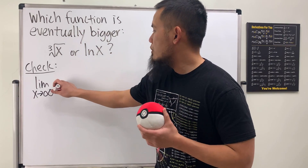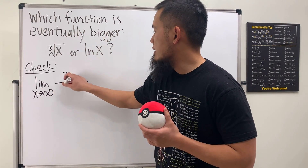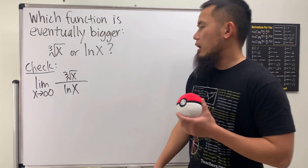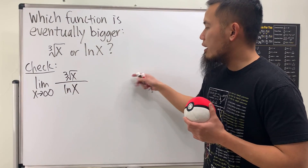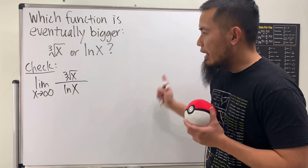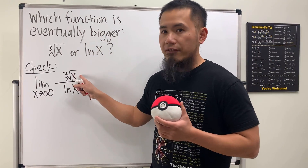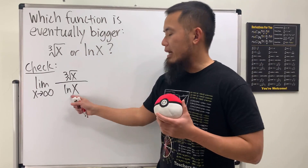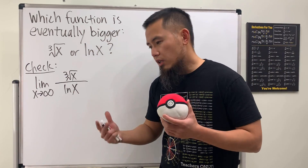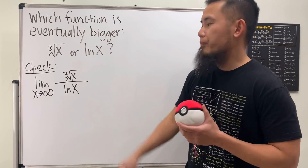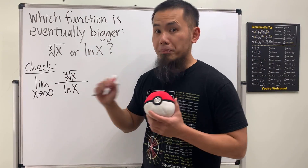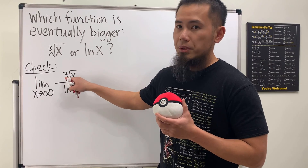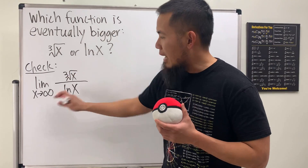It doesn't really matter which one you put on top. I'm going to put the cube root of x on top and divide it by natural log of x. If the result is greater than one, then the top function is bigger. But if the result is less than one, then the bottom function is bigger. Either way we'll know which one is bigger. We can use L'Hôpital's rule because when you plug in infinity, the top is infinity and the bottom is also infinity.